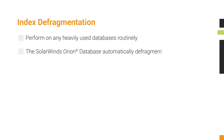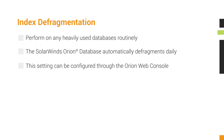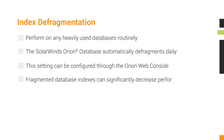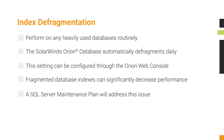By default, the SolarWinds Orion database schedules a maintenance routine to run every 24 hours at 2:15 a.m., but this setting can be configured through the Orion web console. When database maintenance detects highly fragmented database indexes, it can significantly decrease your database performance. The steps in this video will demonstrate how to create a SQL Server maintenance plan to address this issue.